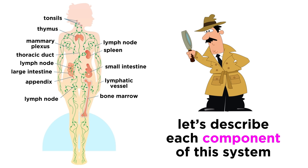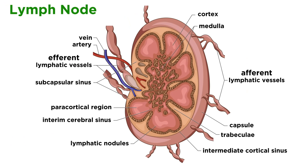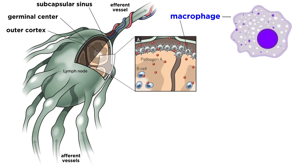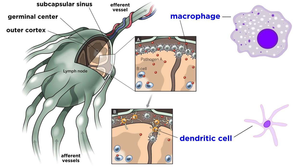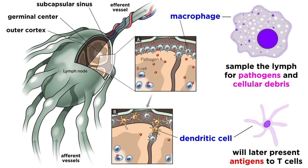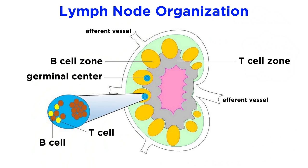Let's now describe each component of this system in more detail from the perspective of immune activity. First up is the lymph nodes. Each lymph node is surrounded by a protective layer of connective tissue called the capsule. Lymph arrives to the node in afferent lymphatic vessels, and then enters the sinuses, which are channels that allow lymph to flow through the different compartments of the node. Lymph node sinuses are lined with macrophages and dendritic cells that sample lymph for pathogens and debris that could trigger an immune reaction. Macrophages in the sinuses act like flypaper in the lymph node, trapping lymph-borne pathogens and preventing them from infecting other cells in the node.